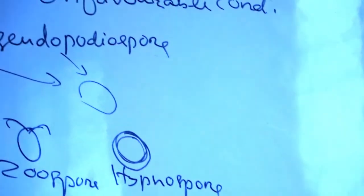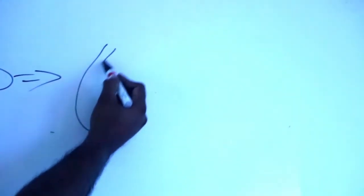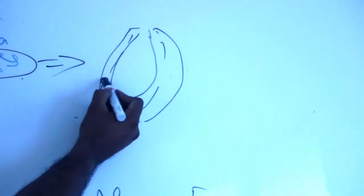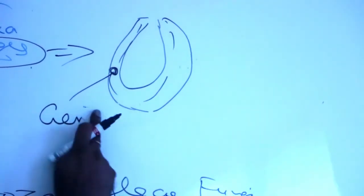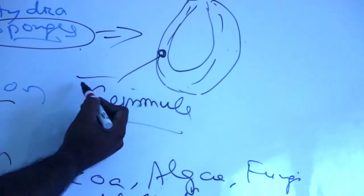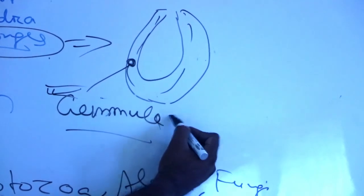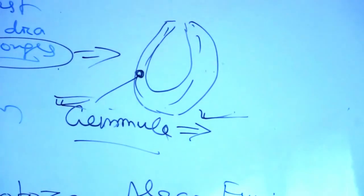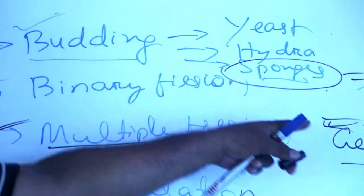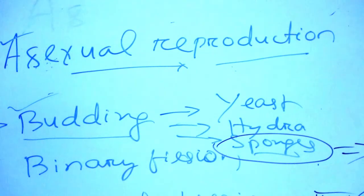Another important point is that in some sponges, buds are produced inside their body. These internal buds are known as gemmules. Each gemmule contains many embryonic cells called archaeocytes, and each archaeocyte grows to form a new individual. Gemmules, otherwise known as internal buds, are found in sponges and are also involved in asexual reproduction. That is all about asexual reproduction of organisms.